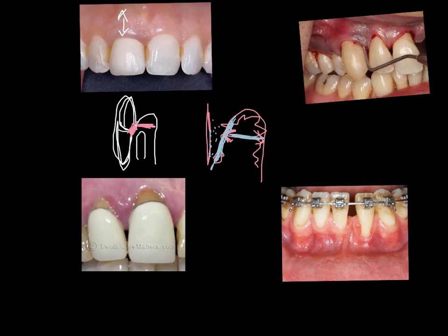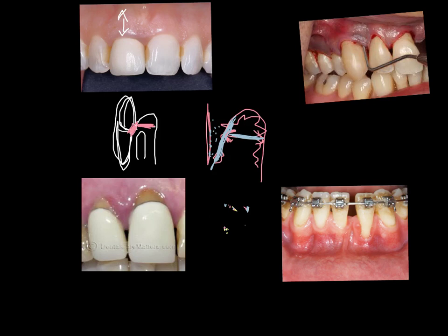However, where the free gingival tissue is thin, the plaque may affect a larger amount of connective tissue. This will end up with inflammatory gingival tissue and subsequent gingival recession. So the thickness of gingiva is very important.